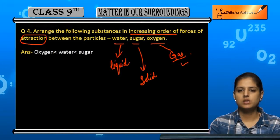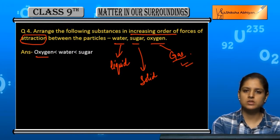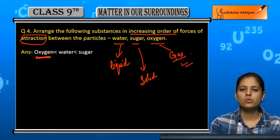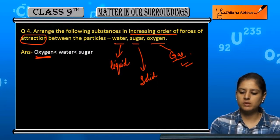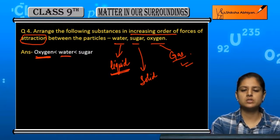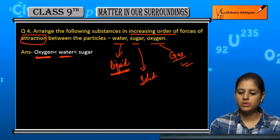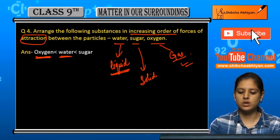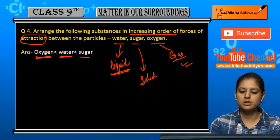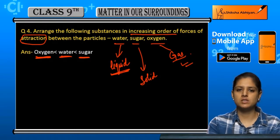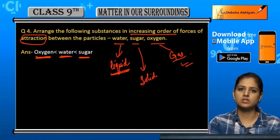less in gas. So in this case it is oxygen first, then we have water, and then we have solid which is sugar. So this is the increasing order of forces of attraction between them.